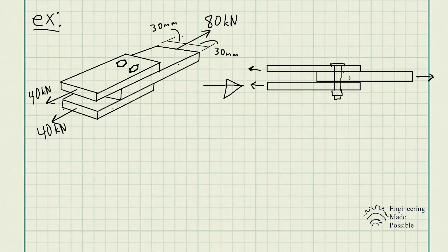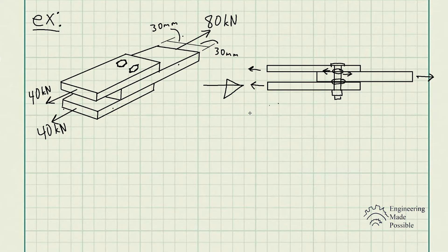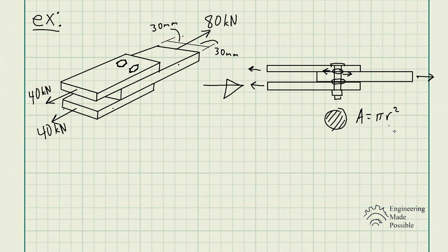We're designing the bolt itself. With the center plate pulled right and the outer two pulled left, there are two shear planes per bolt — one force going one way and an opposing force on each side. The cross-sectional area of each bolt is circular, so the area is π r², or more usefully π/4 × d² to solve for diameter directly.